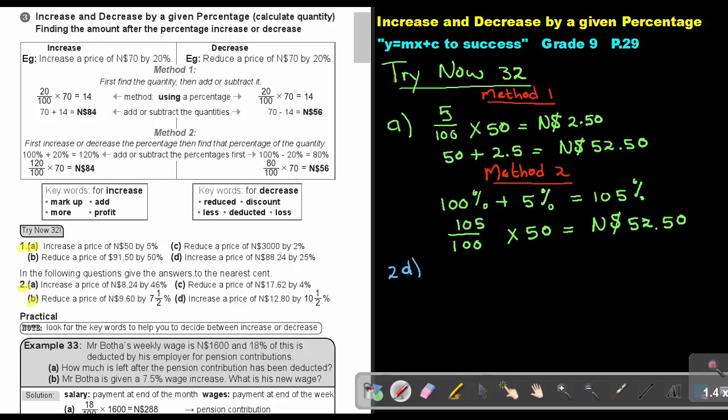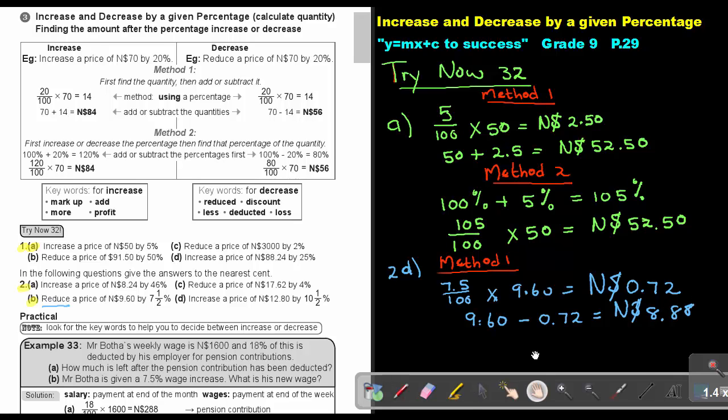Reduce a price of $9.60 by 7.5%. I want to do a reduce one also. So let's start. We do first Method 1. So basically, I'm just going to say, so I'm going to say 7.5 over 100 and I'm going to multiply with 9.6. And that's going to give me an answer of 0.72. Now, because of reduce, I'm just going to say 9.6 minus 0.72, and my final answer will be 8.88.